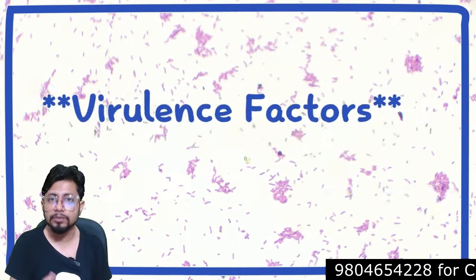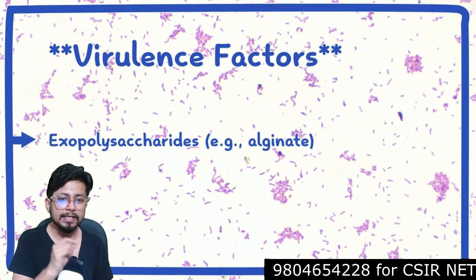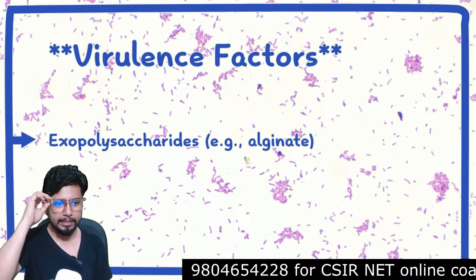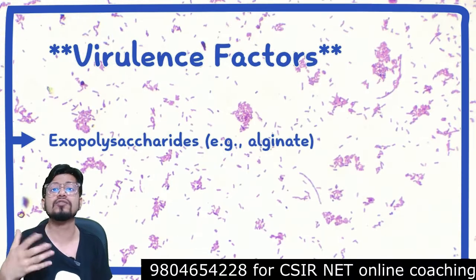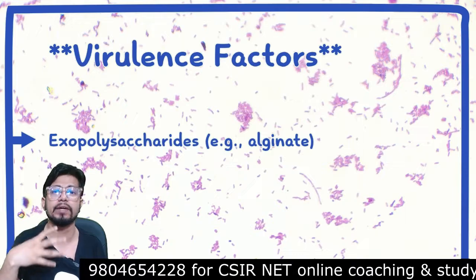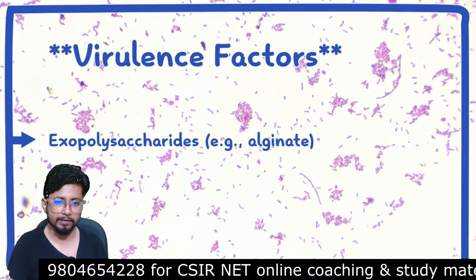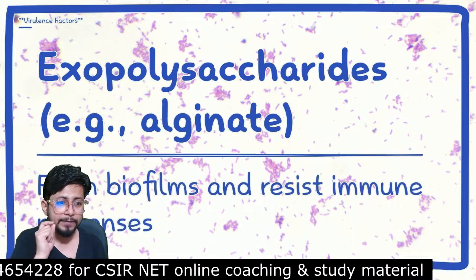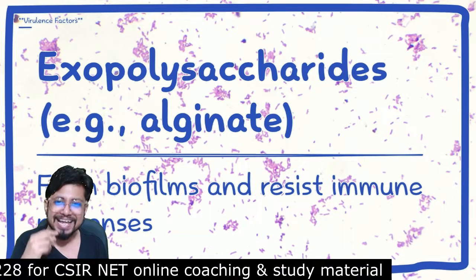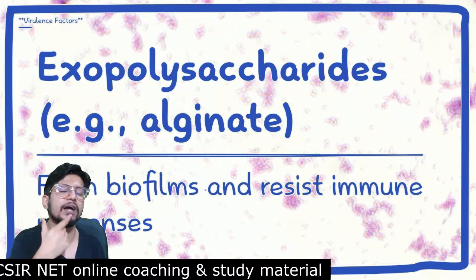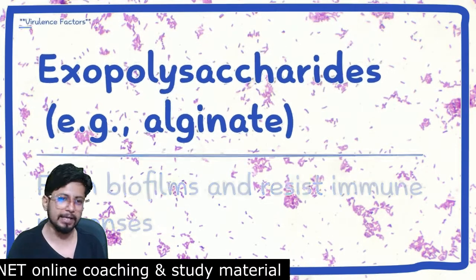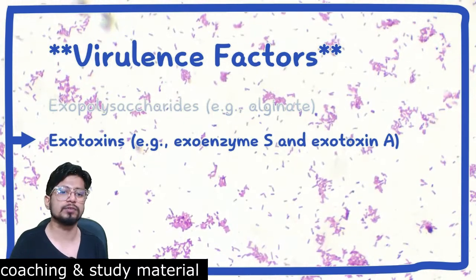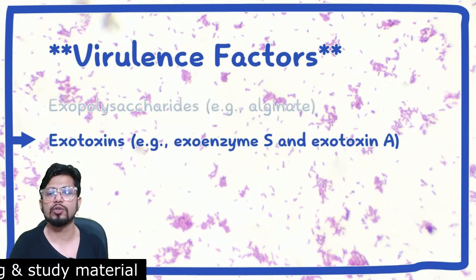Next are the virulence factors. Alginate is an example of an exopolysaccharide, which is part of a carbohydrate moiety present on the outside of the cell. Alginate is utilized to form biofilms that are resistant to immune responses. You can see these biofilm structures forming on teeth and other places.